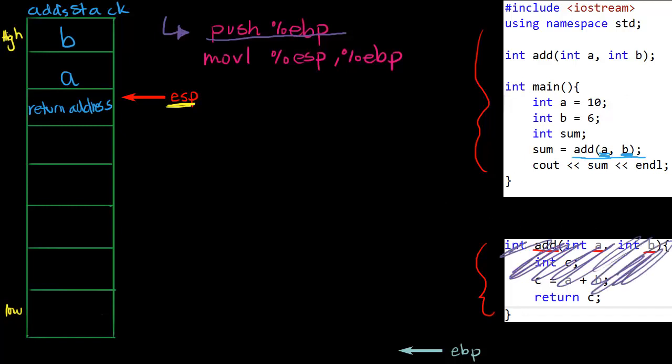So pushing EBP means push EBP onto the stack, onto add stack. Since we're just ignoring this C++ code here, let's say we were writing add in assembly and we know that these lines always seem to come up when a function is written in assembly. So we say push EBP.